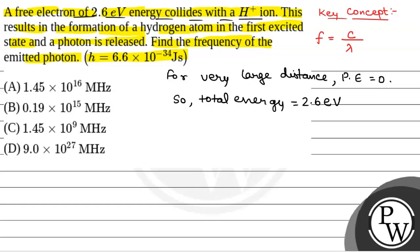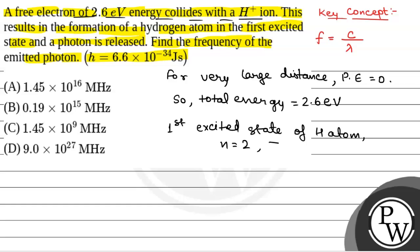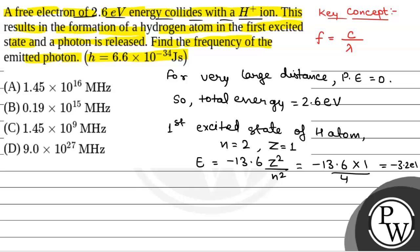In the first excited state of hydrogen atom, N is equal to 2, because in the ground state N is equal to 1. In the first excited state N is equal to 2 and Z for hydrogen atom is equal to 1. So the energy equals minus 13.6 Z squared by N squared, which equals minus 13.6 into 1 divided by 4, which equals minus 3.4 electron volt.